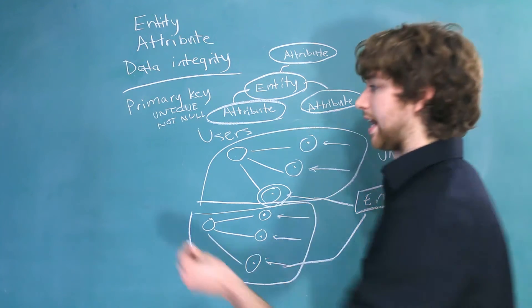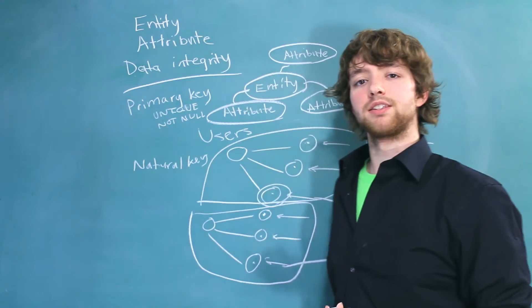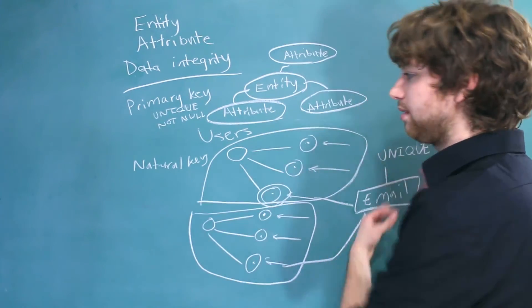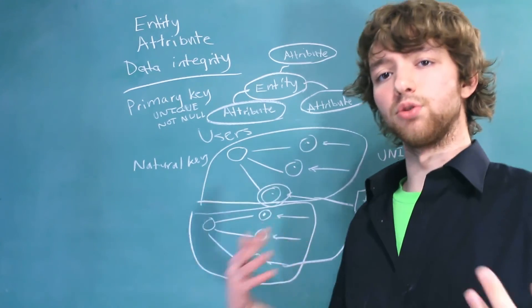This is an example of a natural key. That's because the key is something natural. It's the email. It's something that exists in the real world.